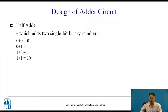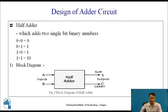According to these rules, we can draw a block diagram for the half adder, where we are considering two single-bit inputs A and B, and it will give us outputs as sum and carry. In the next step, we are going to write the truth table.